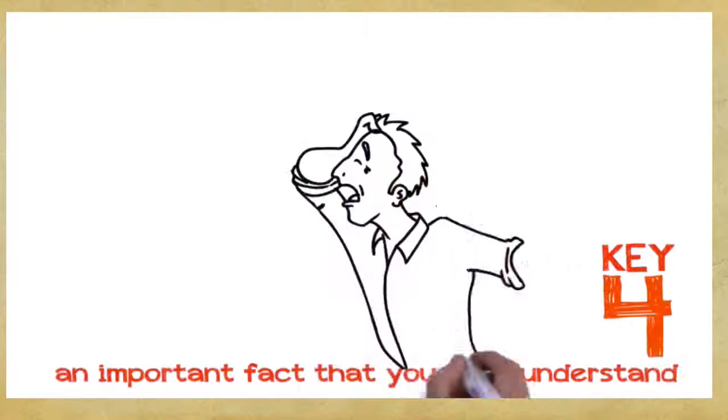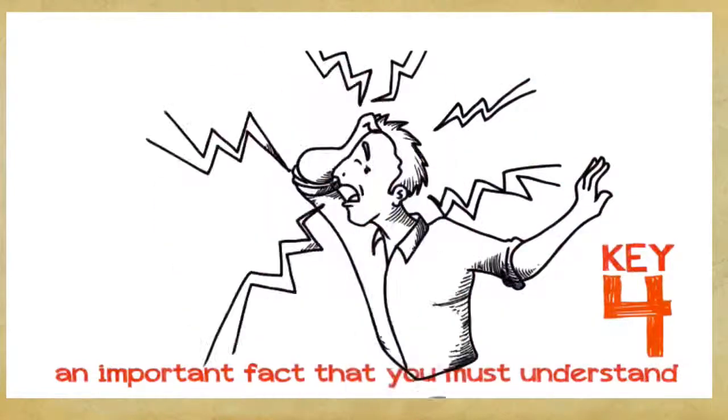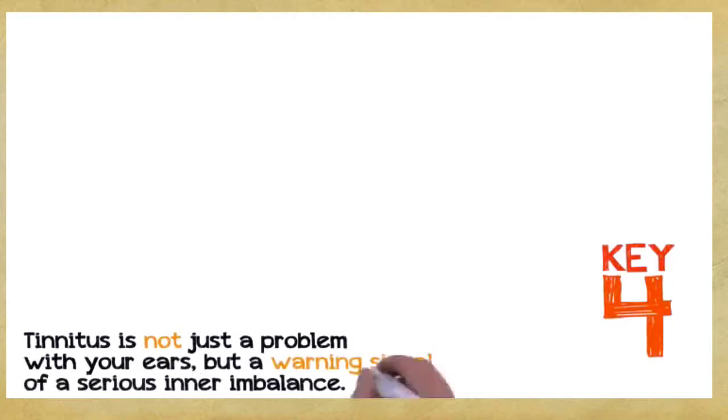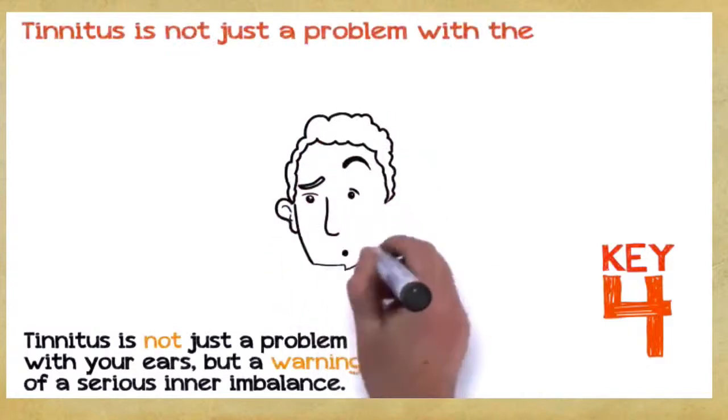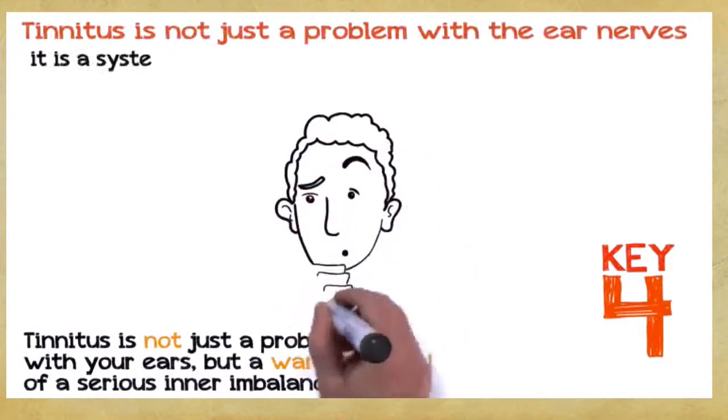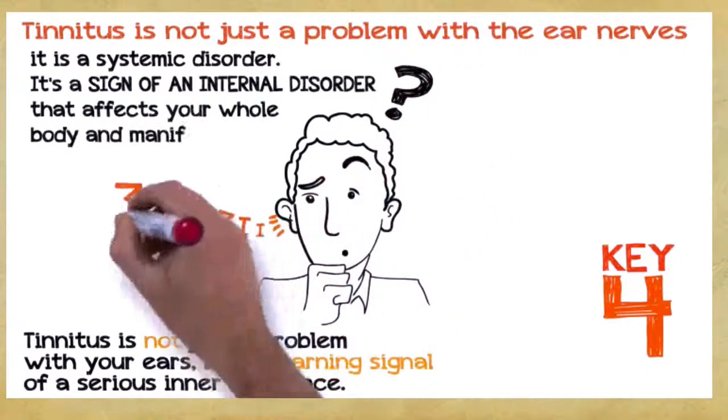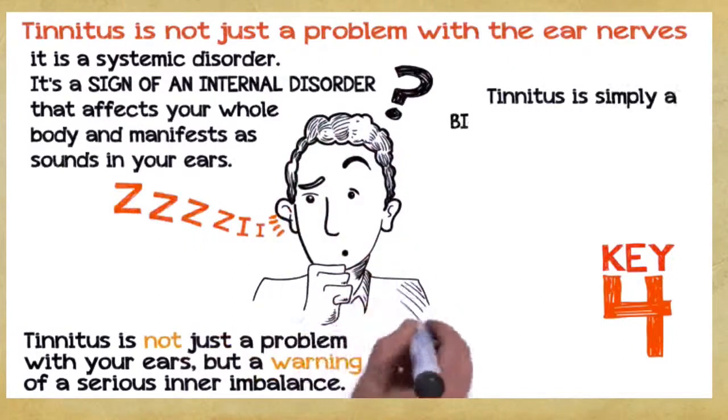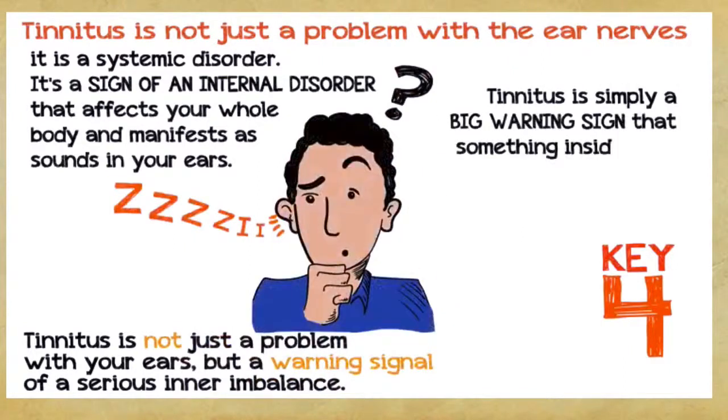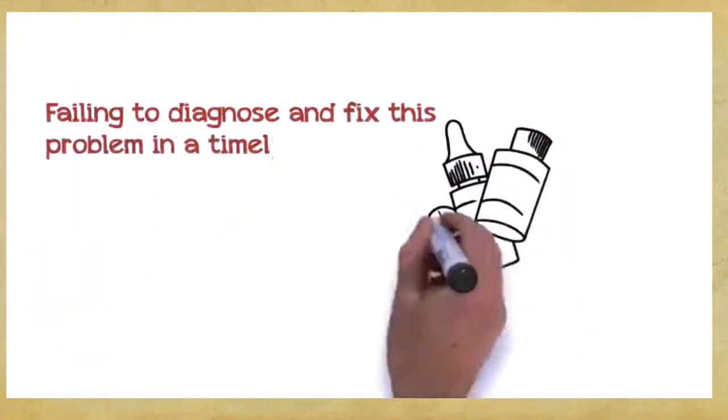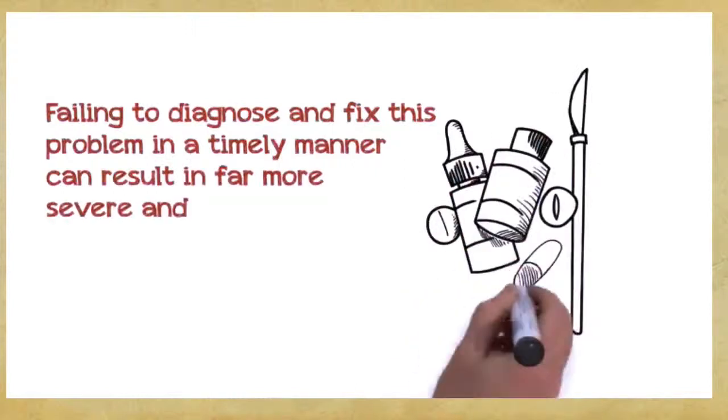Key number four: This is a very important fact that you absolutely must understand if you want to save hundreds or even thousands of dollars. Tinnitus is not just a problem with your ears, but a warning signal of a serious inner imbalance. In the vast majority of cases, tinnitus is not just a problem with the ear nerves, it's a systemic disorder. It's a sign of an internal disorder that affects your whole body and manifests as sounds in your ears. Tinnitus is simply a big warning sign that something inside your system is wrong and needs to be corrected. Failing to diagnose and fix this problem in a timely manner can result in a far more severe and chronic disorder, which can seriously endanger your health.